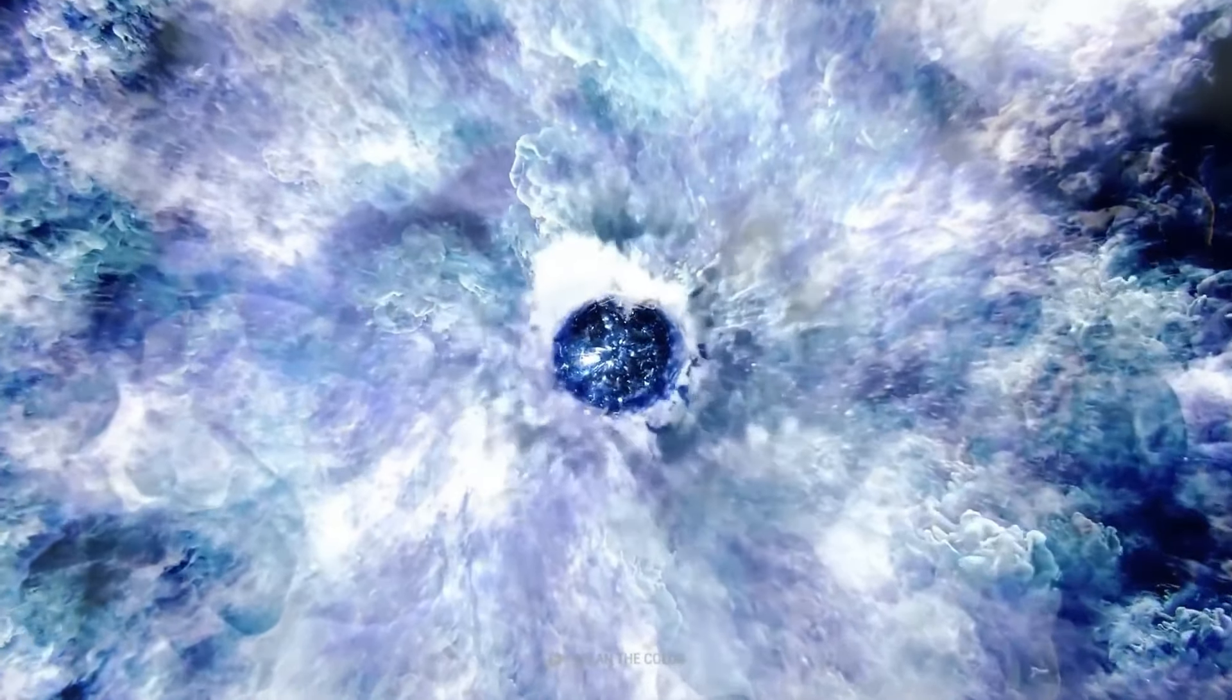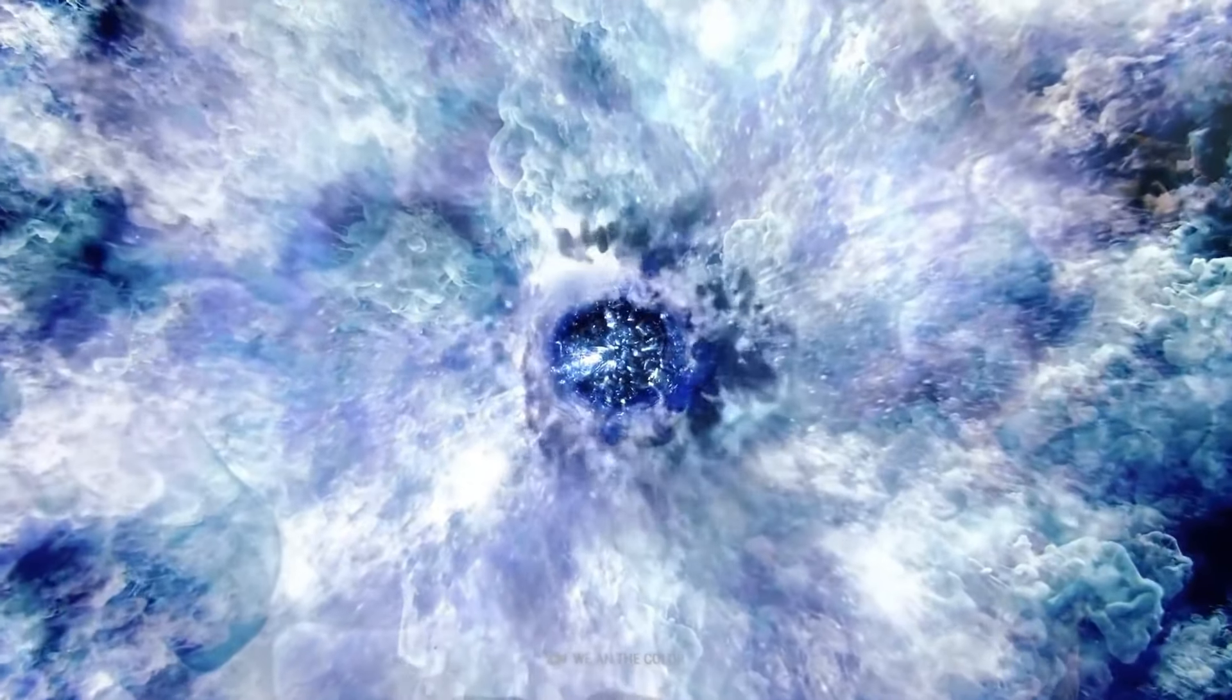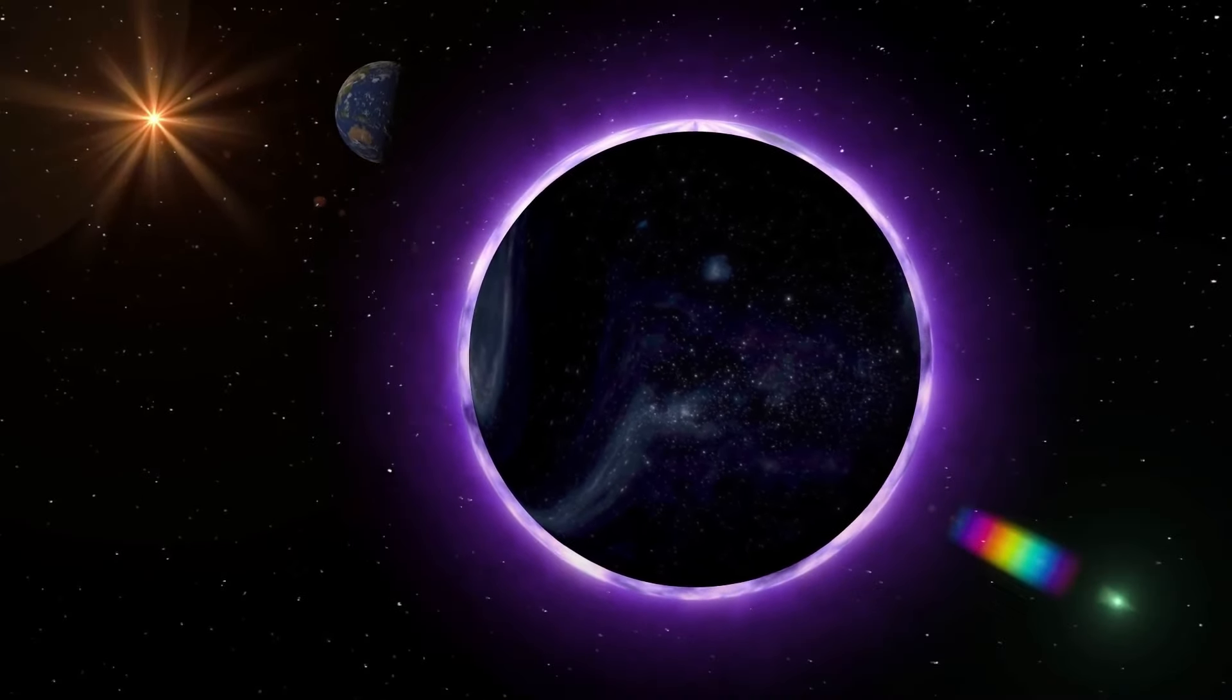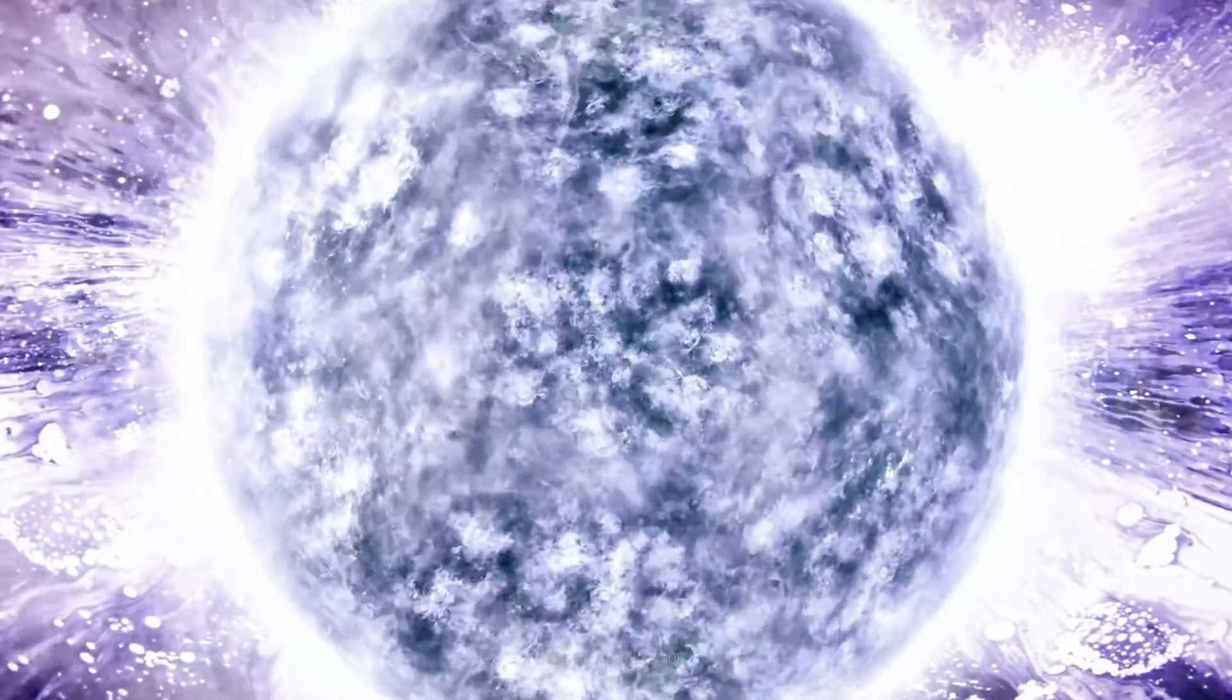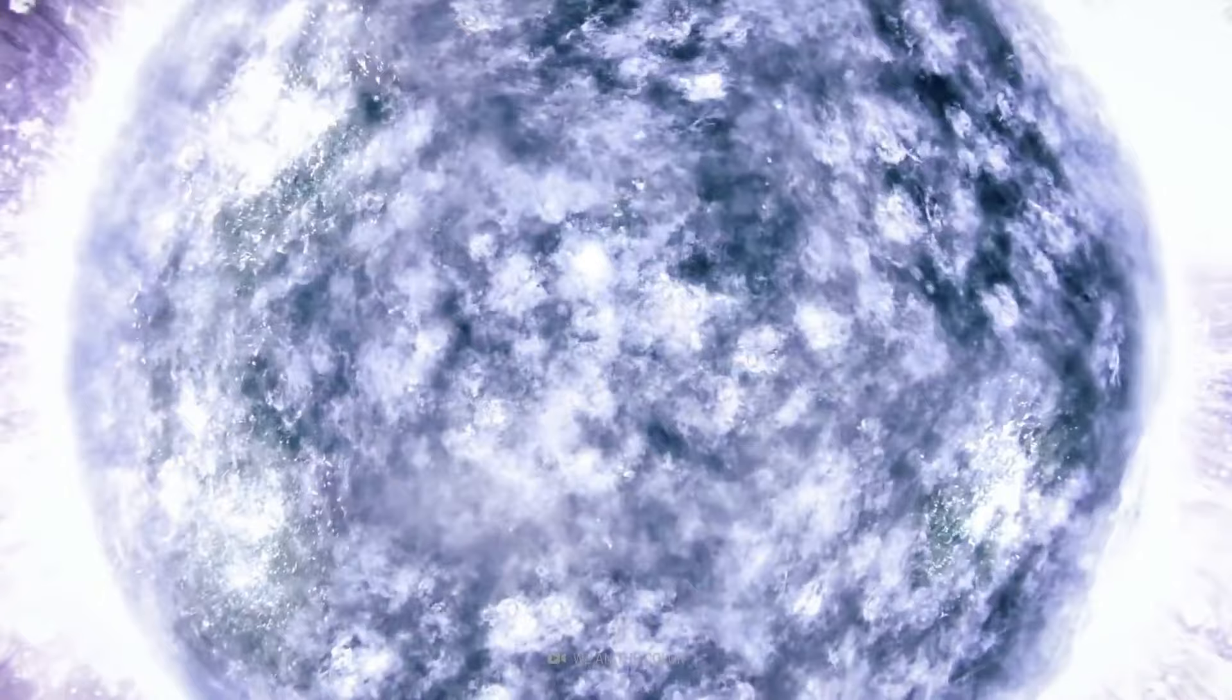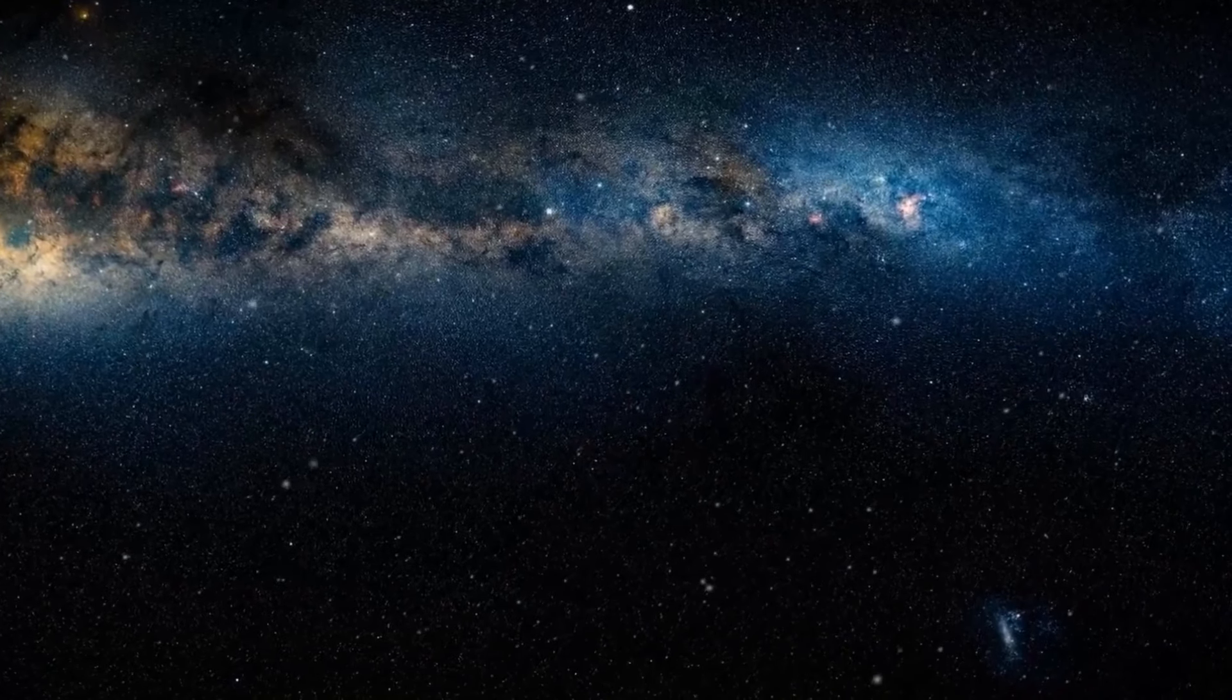As it expands, it cools down, and its color starts to change too. And then comes the dark end. We could say this is the most dramatic part of the star's life cycle. But first, let's categorize them into two groups.